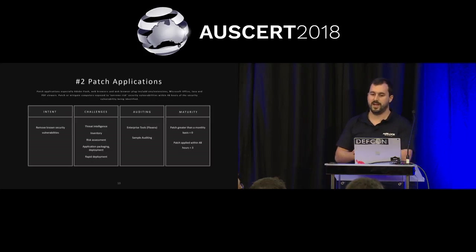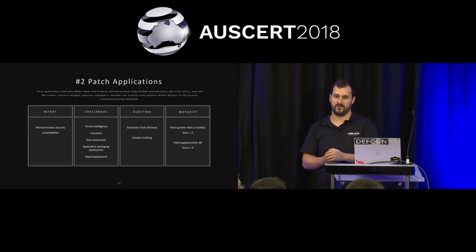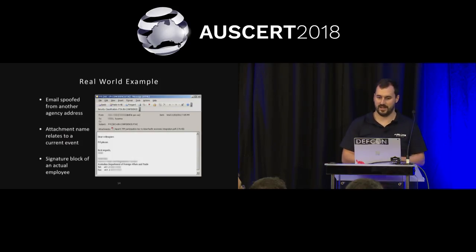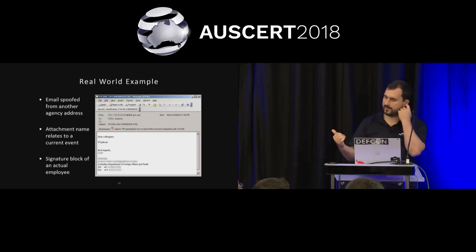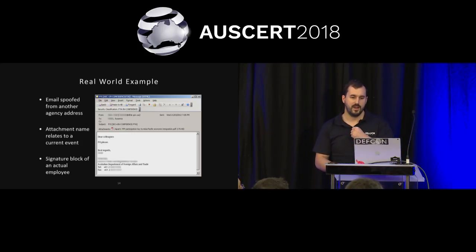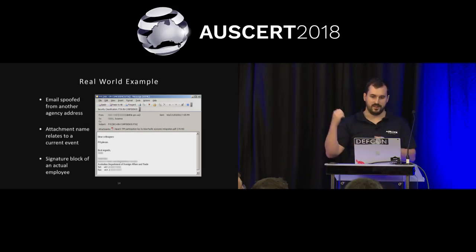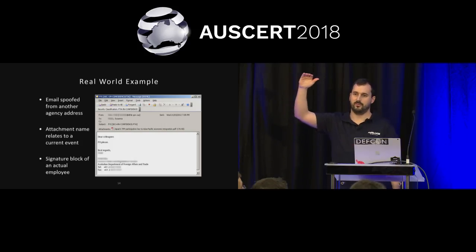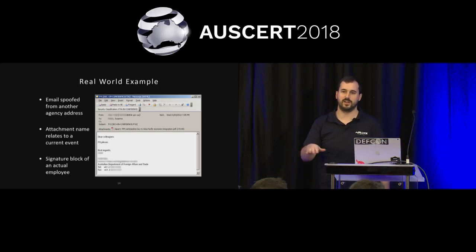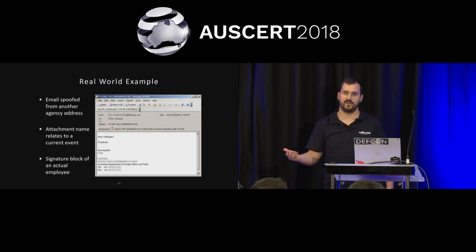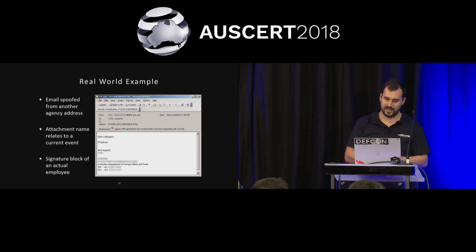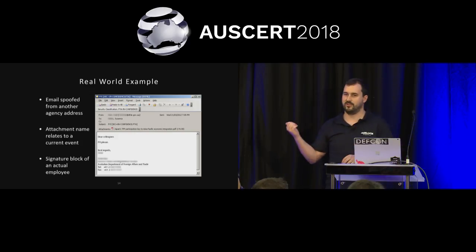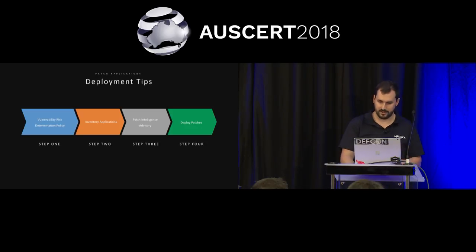ASD say on a maturity scale that if you patch on greater than a monthly basis, you get a score of zero — which is quite harsh. But if you apply a patch within 48 hours, you get a maturity level of three. As a real-world example from a federal government agency, there was an Adobe Reader exploit that was very new at the time. This is why user education went from around number 10 down to number 27 — social engineering and phishing is so good nowadays you can't really teach users not to click on things. In this case, we had just patched Adobe Reader from a recent vulnerability and were not susceptible to that particular attack.